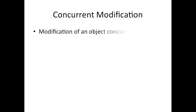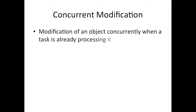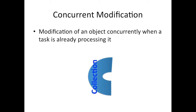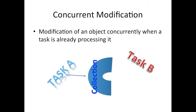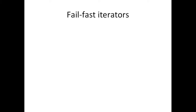Let's first try to have a look at concurrent modification. Modification of an object concurrently when a task is already processing it is called concurrent modification. Suppose we have a collection — task A is iterating over the collection, and another task B tries to modify the collection at the same time. That is an example of concurrent modification.